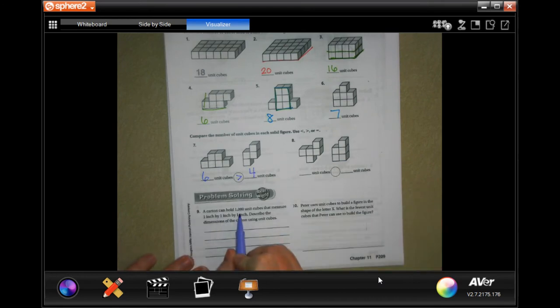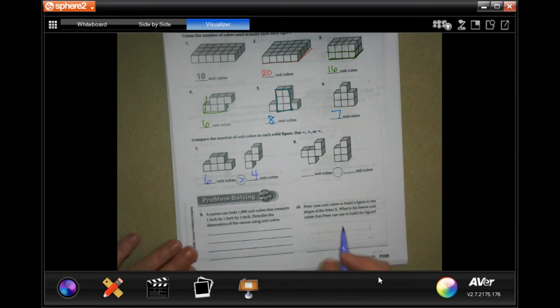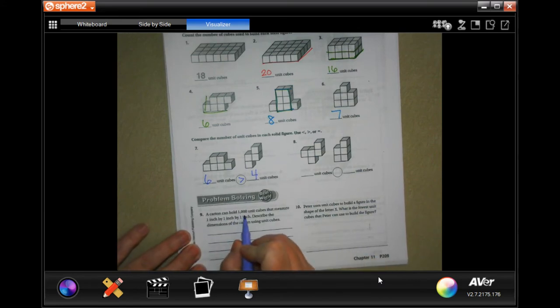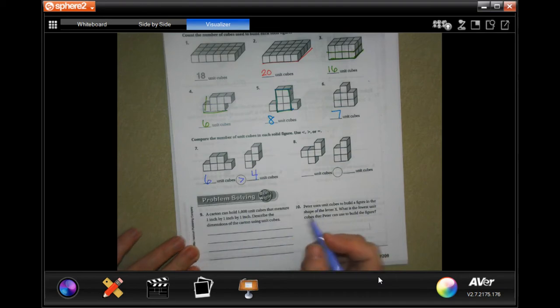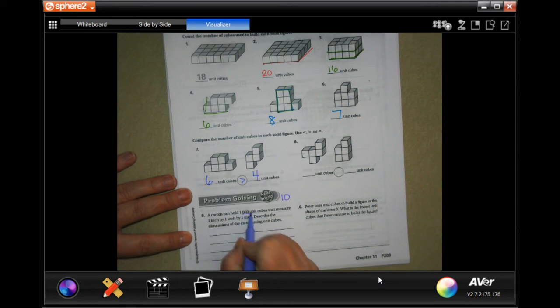A carton can hold 1,000 unit cubes that measure 1 inch by 1 inch by 1 inch. Describe the dimensions of the carton using unit cubes. So it holds 1,000 unit cubes. If you guys will remember when you guys did your exponents, you're going to do 1, 2, 3, 10 to the third.